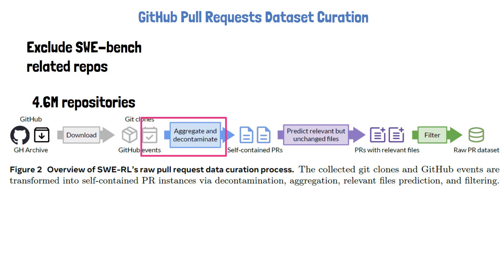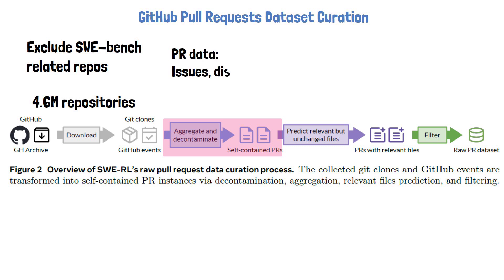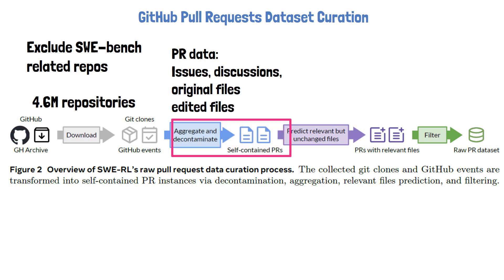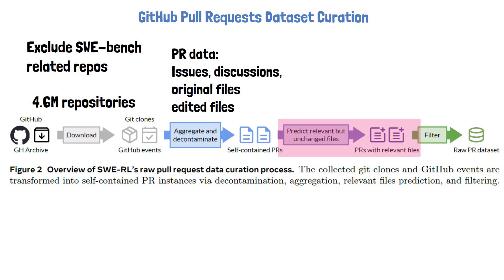The gathered data so far is not structured for training. In the next step, the purpose is to aggregate all relevant information for each pull request to have self-contained pull request data for training. All pull requests that were not eventually merged are filtered out. For each pull request that is kept, we aggregate all of its relevant data — specifically, the description of the issue associated with the pull request, comments, and the content of the edited files before the change. We take the final merged changes to serve as a reference solution. The next step adds related files that are related to the pull request but are not changed as part of it.